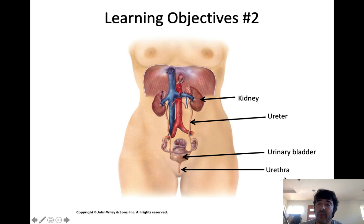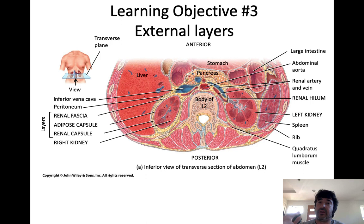Filtered blood plasma that doesn't get reabsorbed eventually enters into the ureter, and at that point it's no longer called filtrate — it's called urine. The ureters are muscular tubes that transport urine from the kidney to the urinary bladder, a muscular sac in the pelvic cavity. The urinary bladder holds urine until it's ready to be excreted through voiding or urination. The tube that transports urine from the urinary bladder to the external environment is the urethra. So the four organs of the urinary system are the kidneys, the ureters, the urinary bladder, and the urethra.